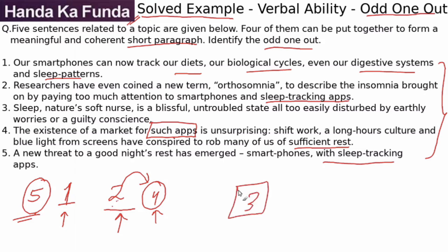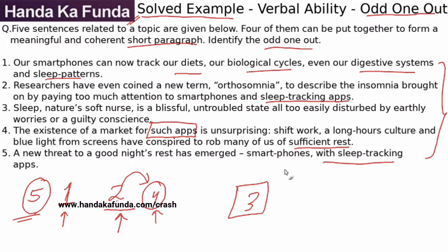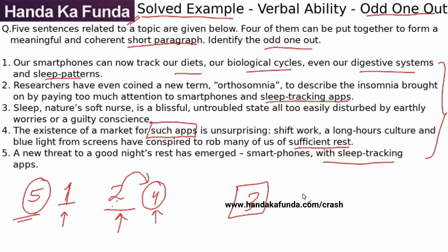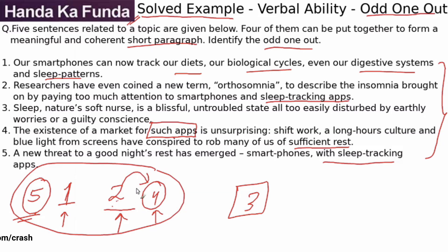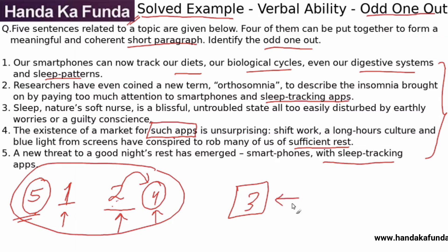Sentence three gives us a very generic description of sleep and what it is. It is not really talking about smartphones and the impact of apps — the impact of technology. It's talking about earthly worries and a guilty conscience. So five, one, two, and four are all related to each other, talking about smartphones and apps and their impact on sleep. Three is just talking about sleep in general, so three is the odd one out.